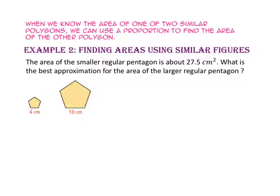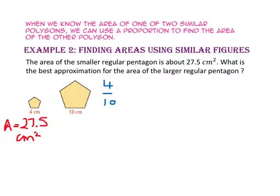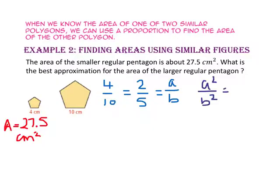When we know the area of one of two similar polygons, we can use a proportion to find the area of the other polygon. In example 2, we will find area using similar figures. The area of the smaller regular pentagon is about 27.5 centimeters squared. What is the best approximation for the area of the larger regular pentagon? Since the lengths of the corresponding sides are 4 to 10, the scale factor will be 2 to 5. Since the ratio of our areas is A squared to B squared, the ratio will be 2 squared to 5 squared, or 4 to 25.